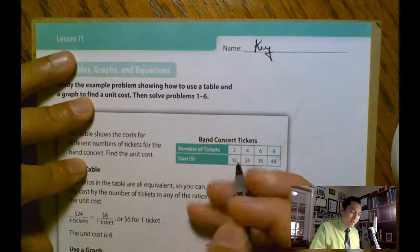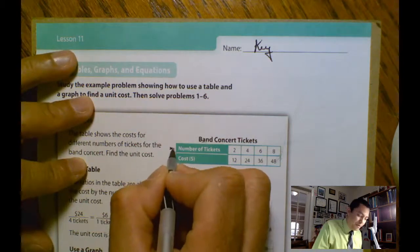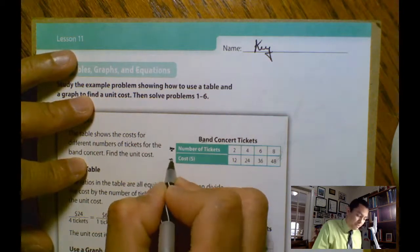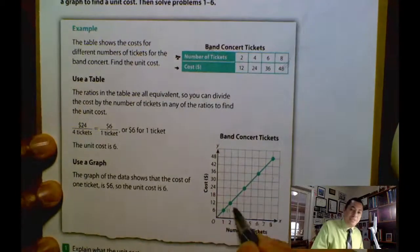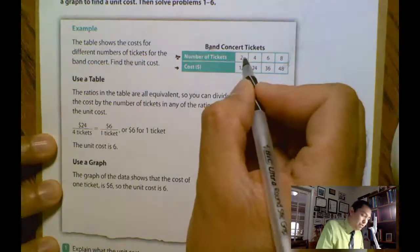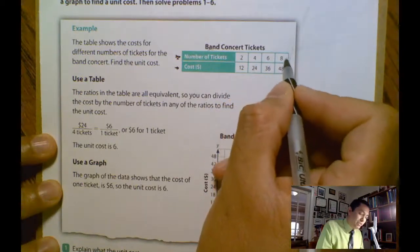Remember that we have band concert tickets. I have the number of tickets, I have the cost. Then here I have the graph. As you can see it's a linear function. I have 2, 12, 4, 24, 6, 36, 8, 48.